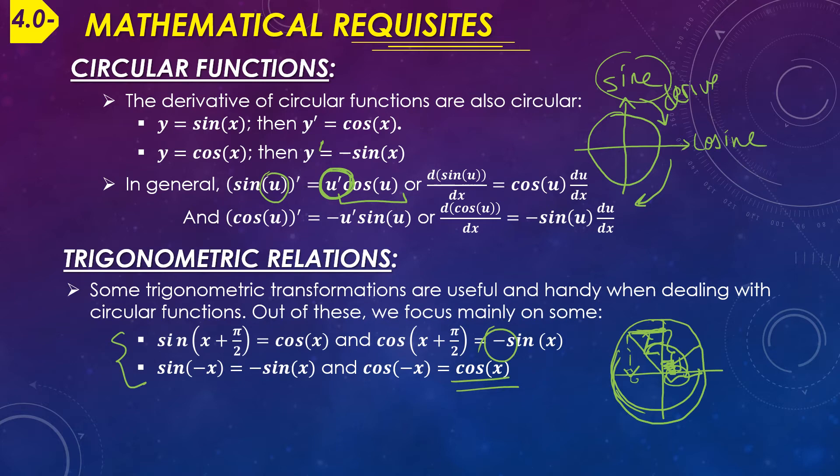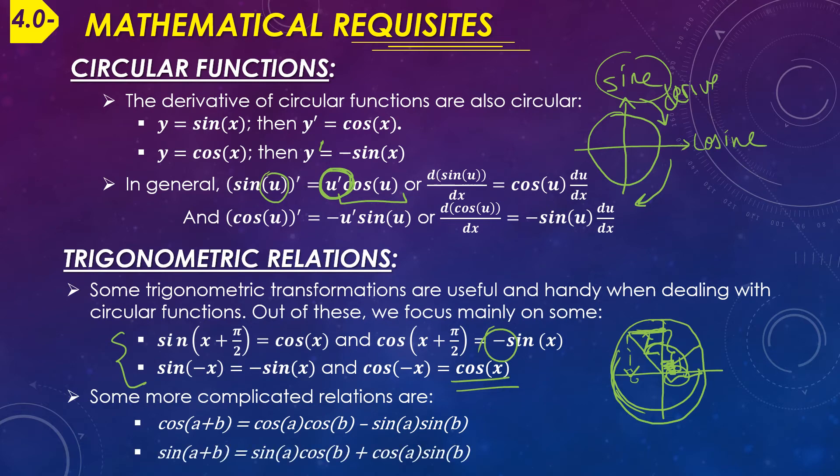Some more complicated relations are cos(a + b) = cos(a)cos(b) - sin(a)sin(b), and sin(a + b) = sin(a)cos(b) + cos(a)sin(b). Once again, just have these with you in case you need them.